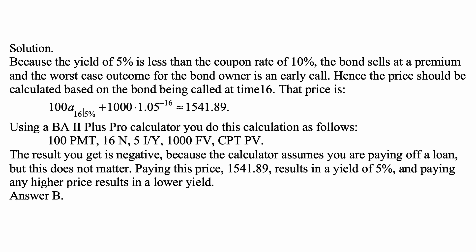If you are using a BA2 Plus Pro calculator, you can do this calculation as follows: put in 100 for a payment, 16 for N, 5 for IY (the yield), 1000 for future value, and then compute present value (CPT, PV). The result is negative because the calculator assumes you are paying off a loan, but this does not matter. Paying this price of 1541.89 results in a yield of 5%, and paying any higher price would result in a lower yield.